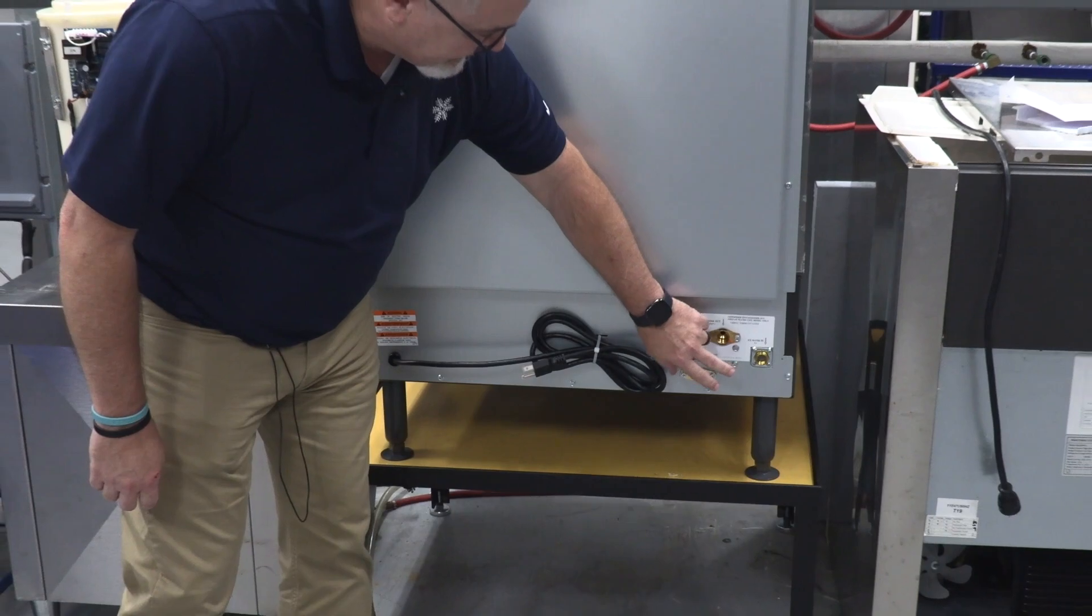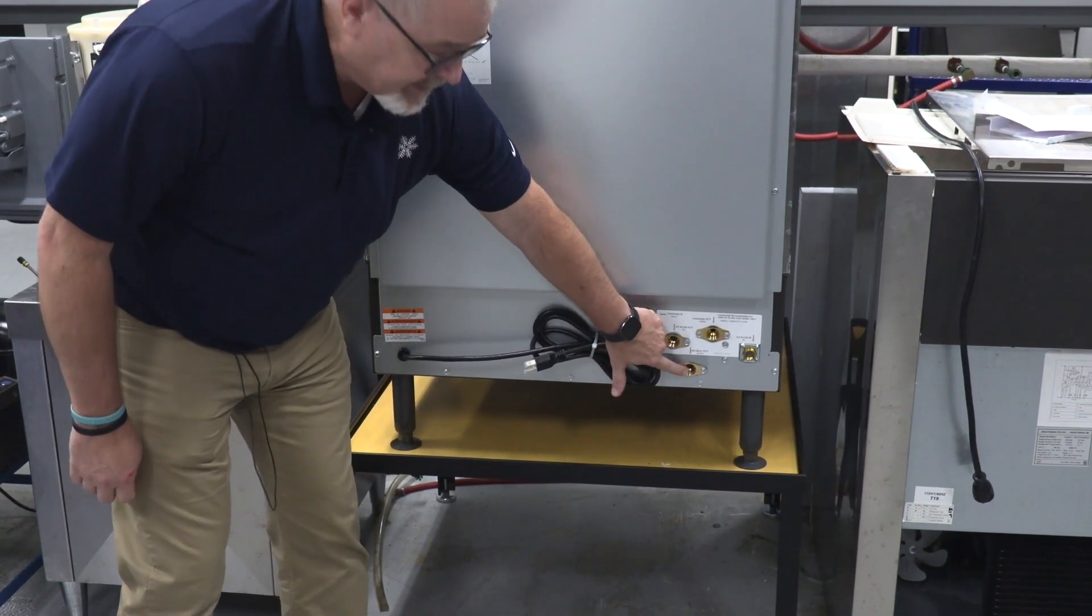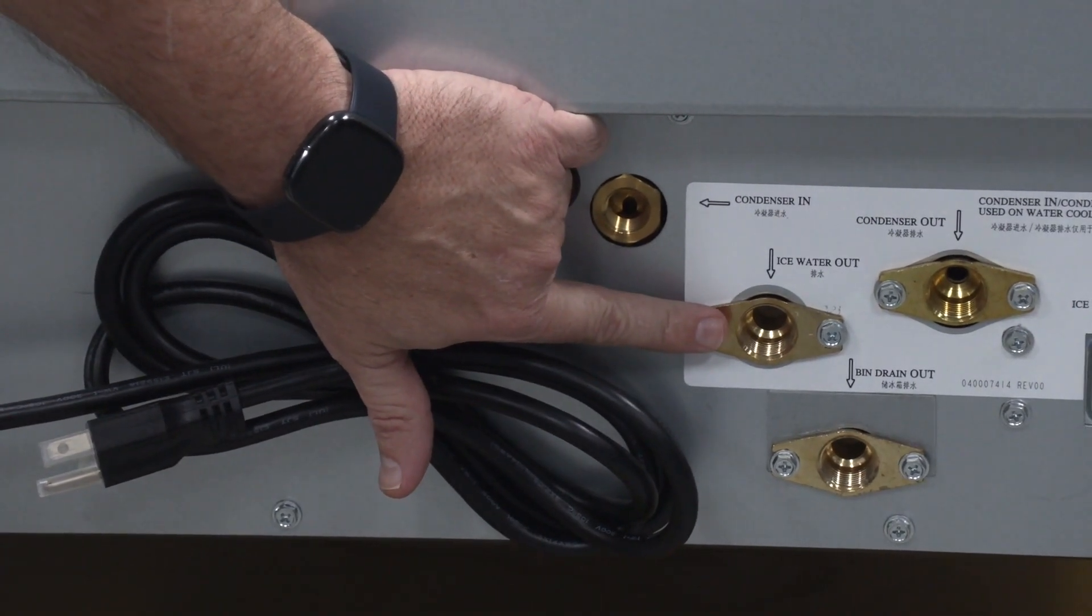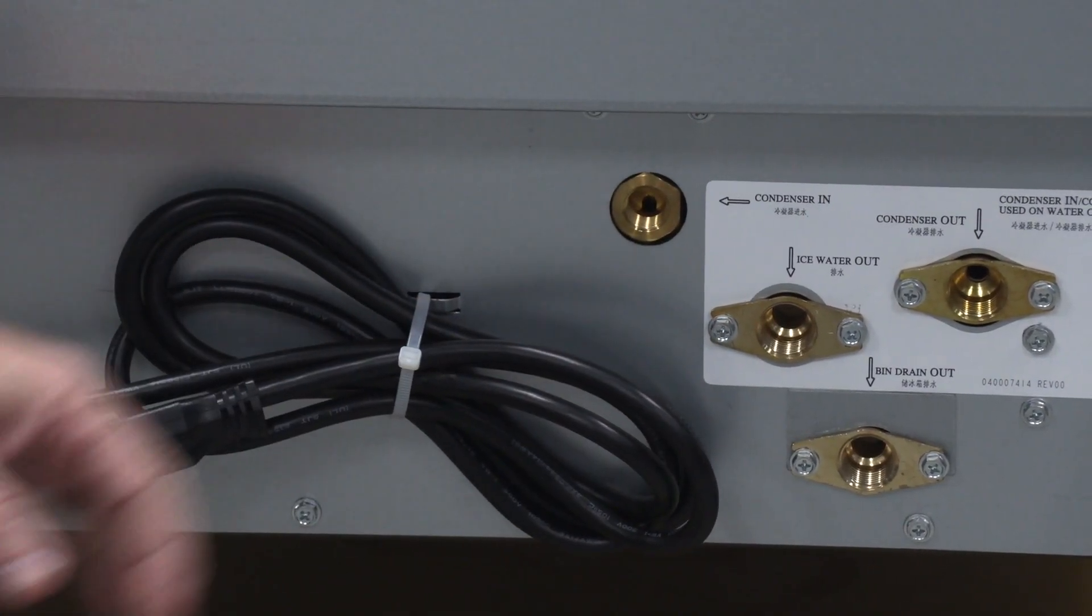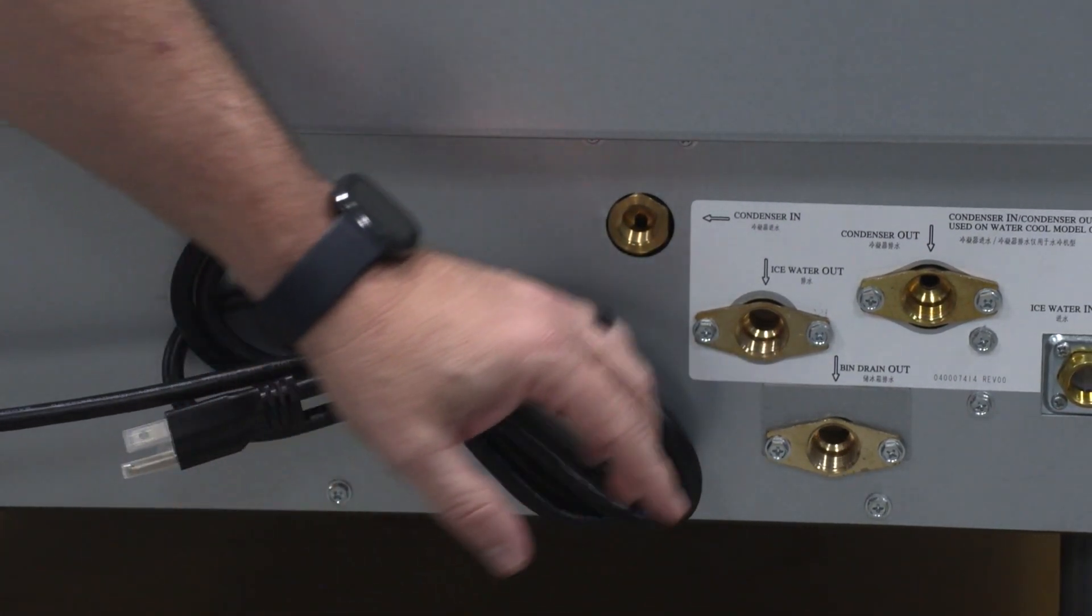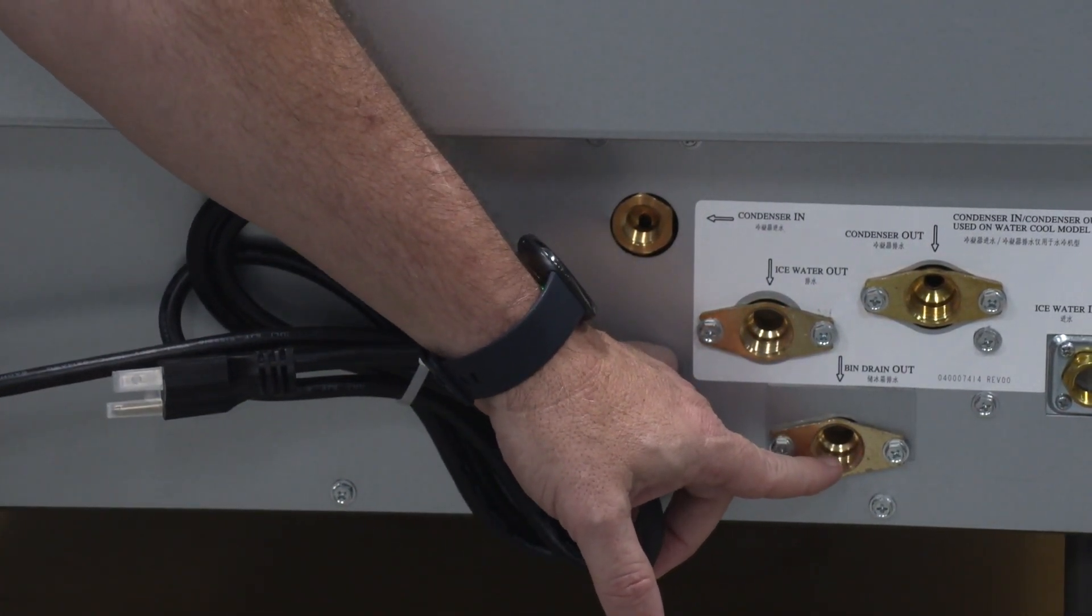And so currently we have a bin drain here. This is going to be a separate drain as well as your ice making water drain here. So when the machine goes into a harvest cycle, the water is going to dump out of this line here down the drain. This is melted ice from your storage bin.